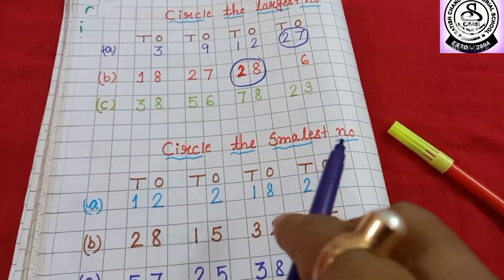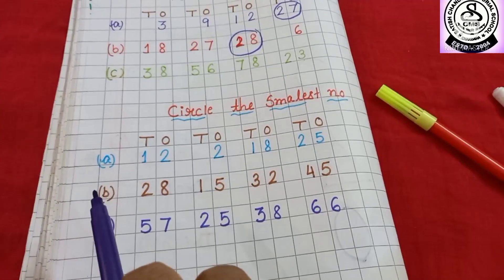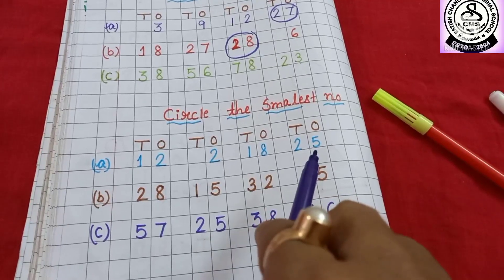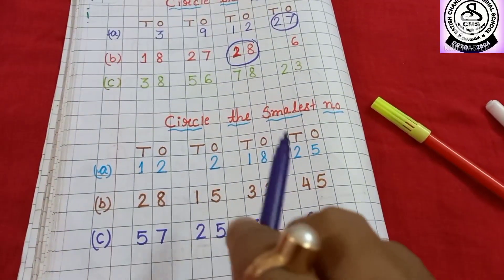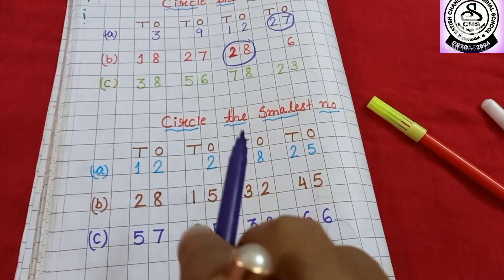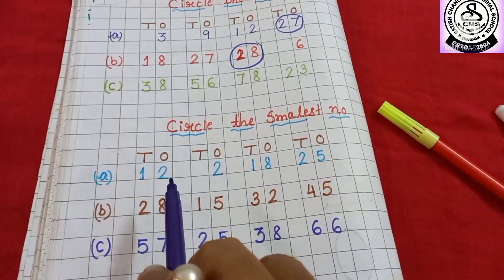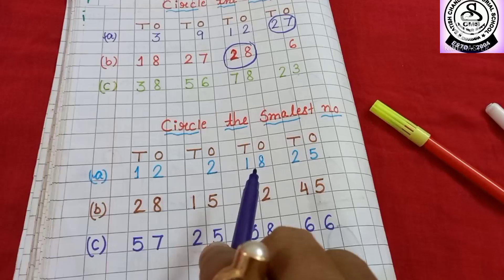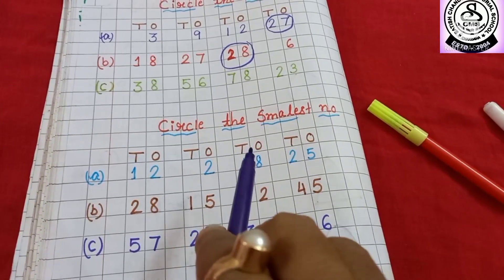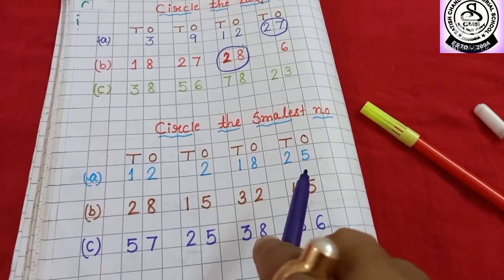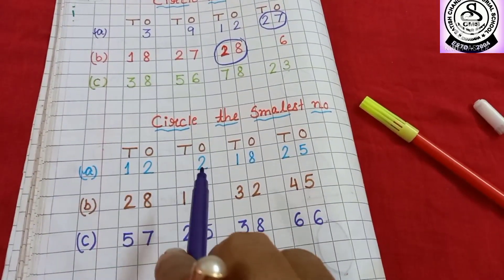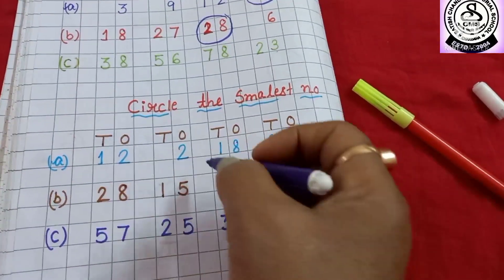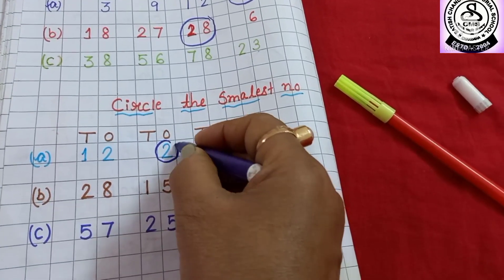Circle the smallest number. Number A — I have written 12, 2, 18, and 25. From here you have to choose which one is the smallest number and circle it. 12 is a 2-digit number, 2 is a 1-digit number, 18 is a 2-digit number, and 25 is also a 2-digit number. Only 2 is a 1-digit number, so 2 is smaller than all the other numbers. So I am going to circle it.